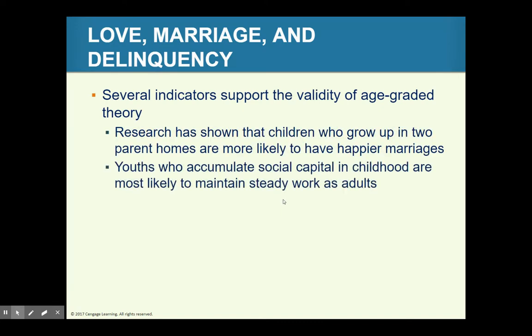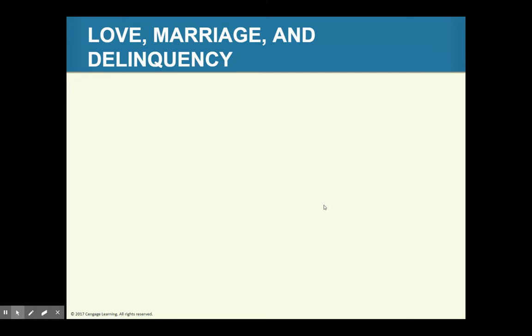To remember: the development of a positive career and marriage are really two key indicators of keeping deviance out of your life and being able to move past juvenile delinquency toward a successful life.